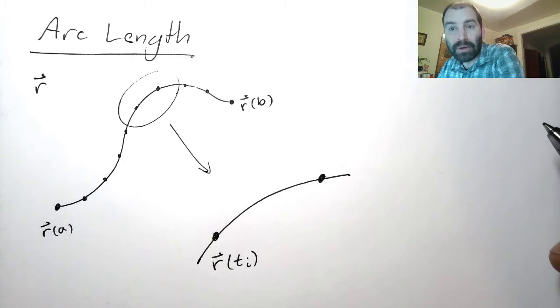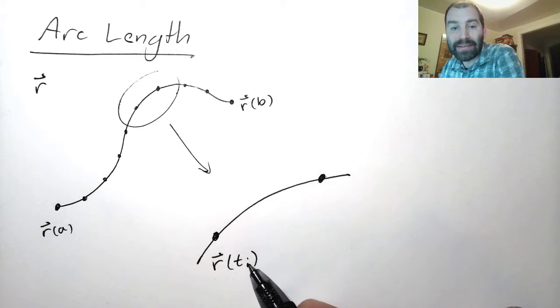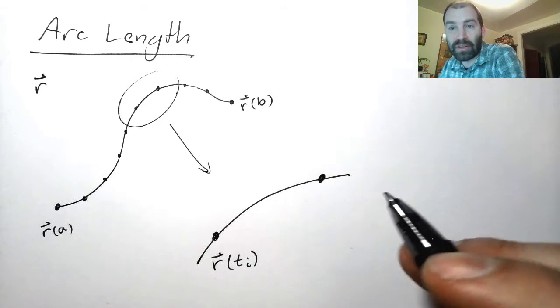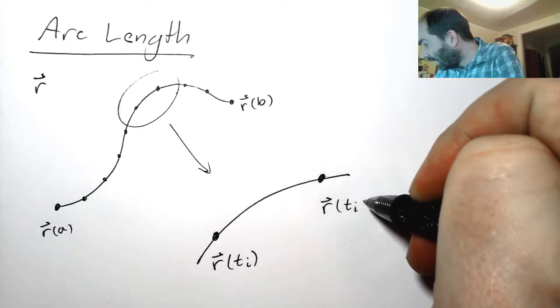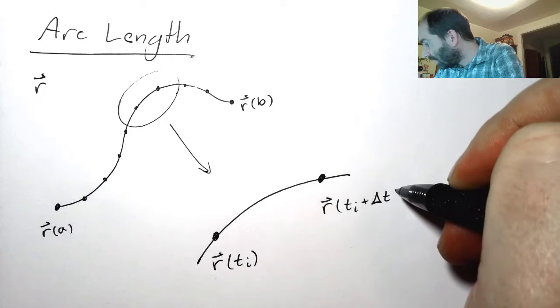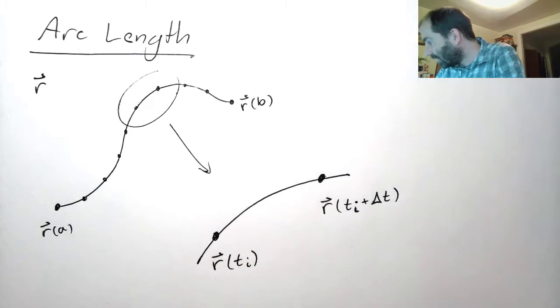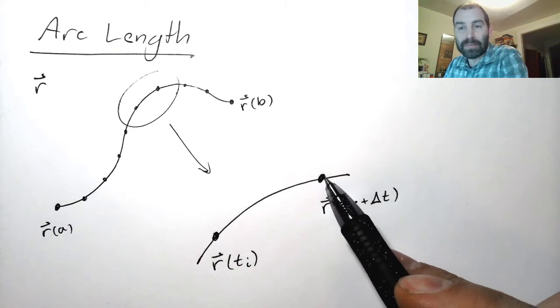This point over here is r of t at the next partition point. So I'm going to add to t some small amount. Let's call that delta t. So this is r of ti plus delta t, a change in t. That's my next point.